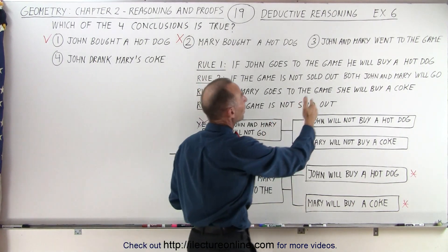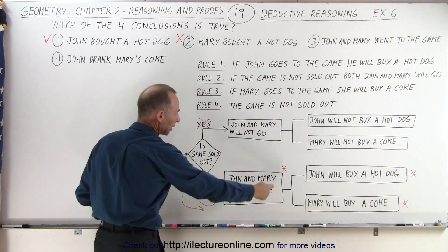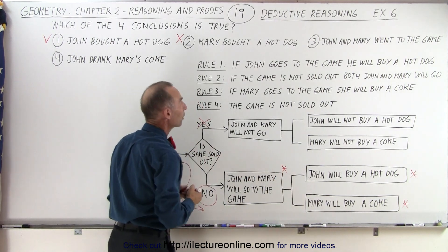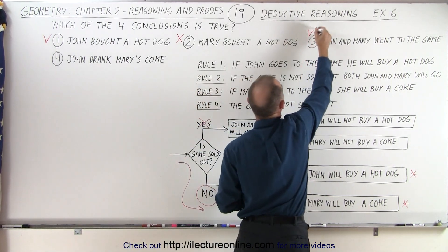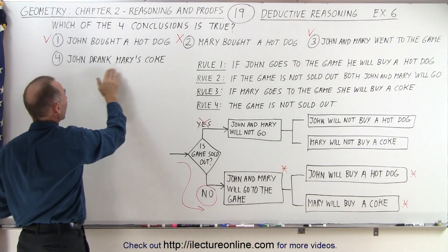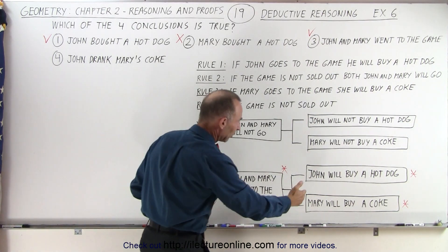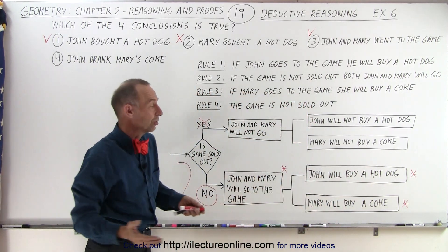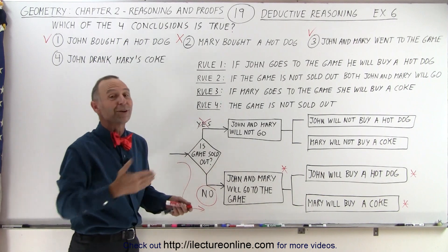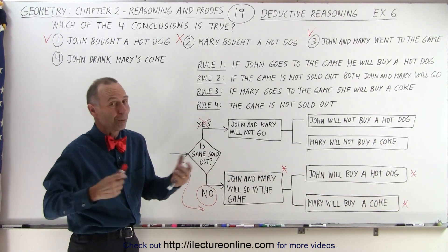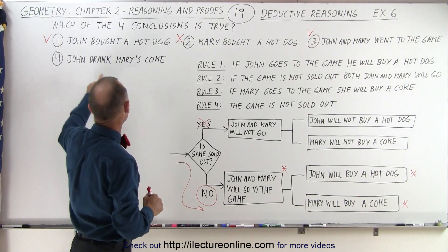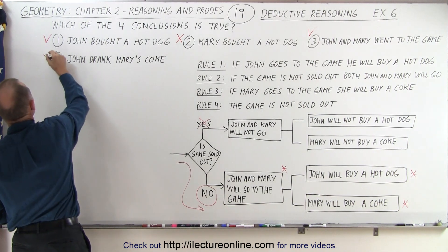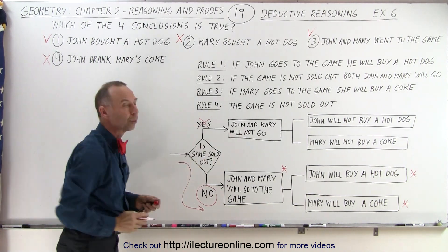Third, John and Mary went to the game — yes, John and Mary will go to the game because the game was not sold out. So therefore this is a true statement. And finally, John drank Mary's Coke — John bought a hot dog, Mary bought a Coke, but there's no indication that either John or Mary drank the Coke. It's presumably that Mary drank the Coke, but we don't know. We just know that she bought the Coke, and we definitely don't know for sure if John drank Mary's Coke. So this is not a true statement based upon the rules we have.